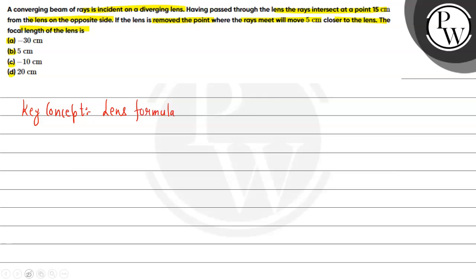The lens formula is: one over v minus one over u is equal to one over f, where v is the image distance, u is the object distance, and f is the focal length of the lens.